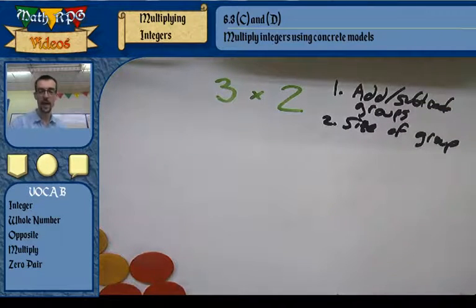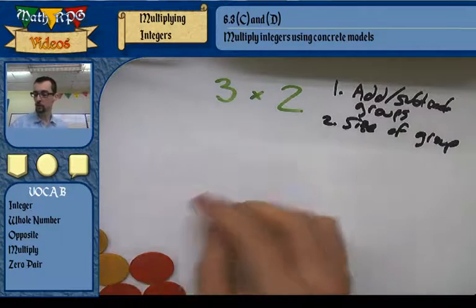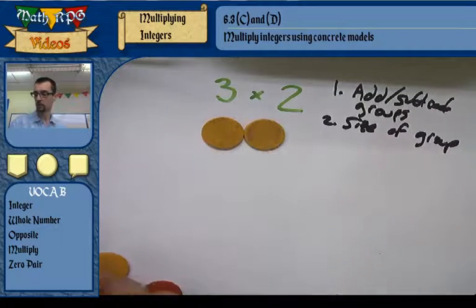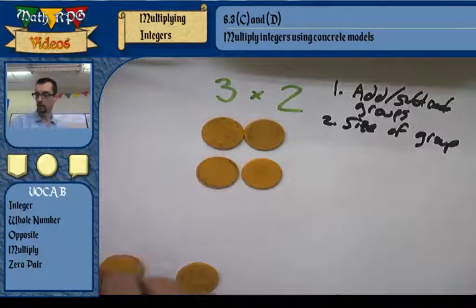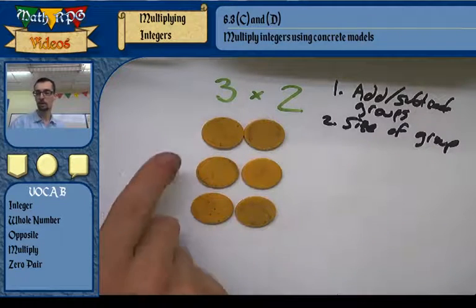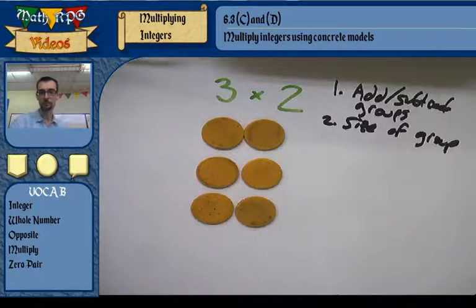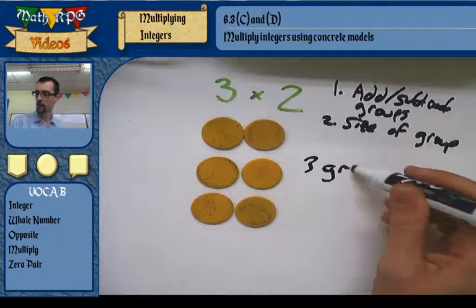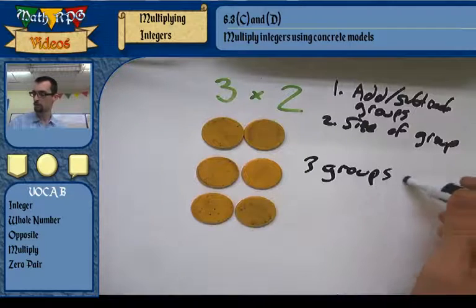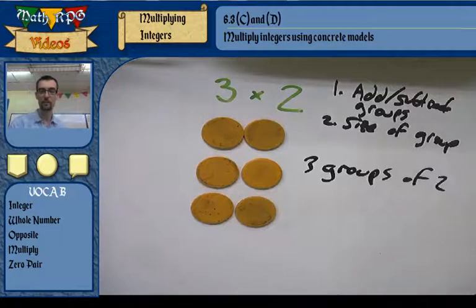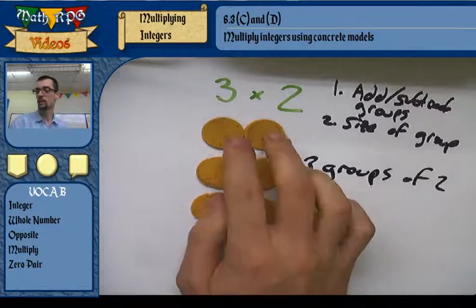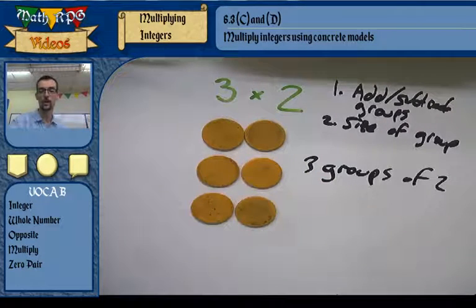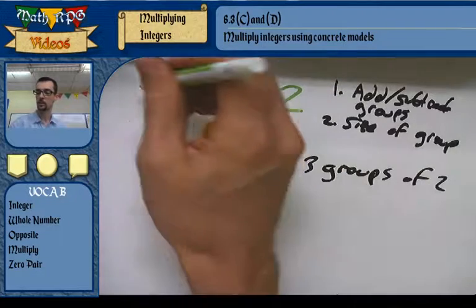So 3 times 2 tells me to add three groups of size 2. There's one group of two things, I'm going to add another group, and a third group — that is three groups of 2. So I added three groups of 2 color tokens to the table, and I have 6. No surprise there: 3 times 2 is 6.